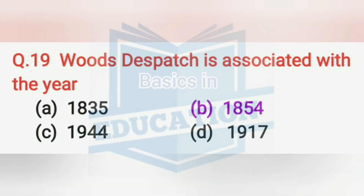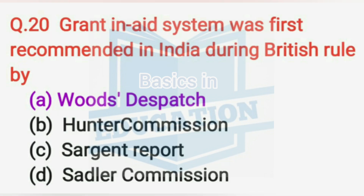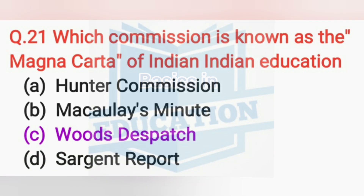Wood's Dispatch is associated with the year 1854. The Grant-in-Aid system was first recommended in India during British rule by Wood's Dispatch. Wood's Dispatch is also known as the Magna Carta of Indian Education.